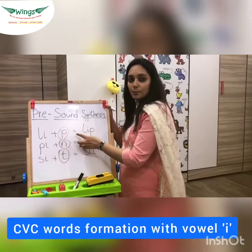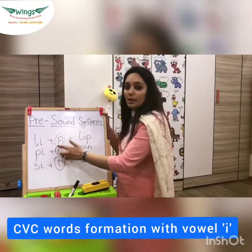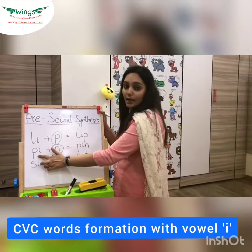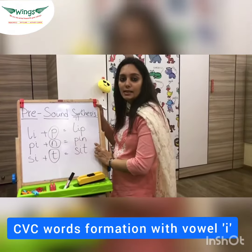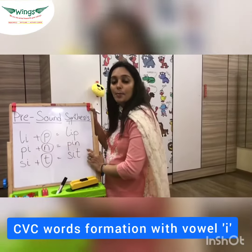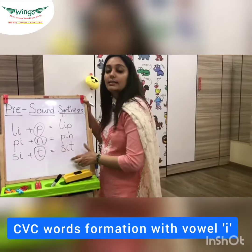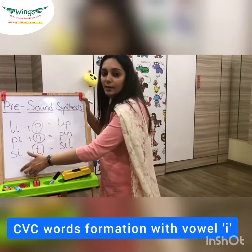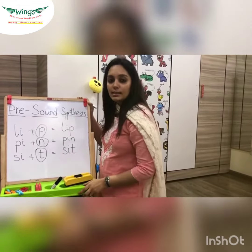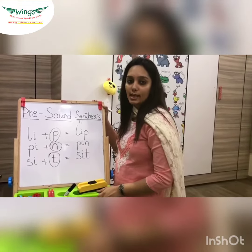Li plus purr is li. P plus I is pin. C plus turr is sit. So this is how we do the pre-sum synthesis with the I sound.